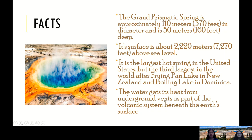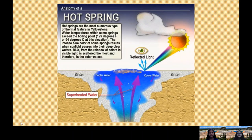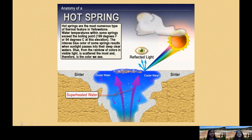The water gets its heat from underground vents as part of the volcanic system beneath the earth's surface. This picture shows the sun reflecting off the cool water in the hot spring, which can also contribute to the different colors visible. The intense blue color results when sunlight passes into the deep clear waters — blue light from the spectrum is scattered the most and therefore it is the color that we see.